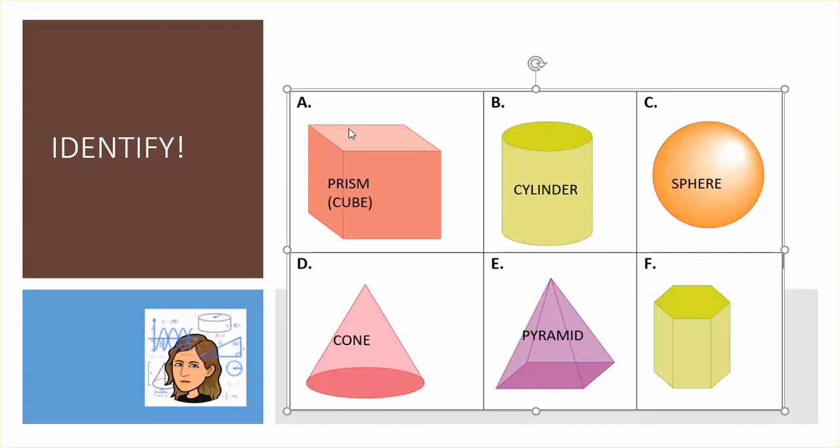Remember though, A was also a prism. So what makes them different? It's the shape of their base. So here I can see that my top has six sides. That's a hexagon. And our 3D shape is a hexagonal prism.